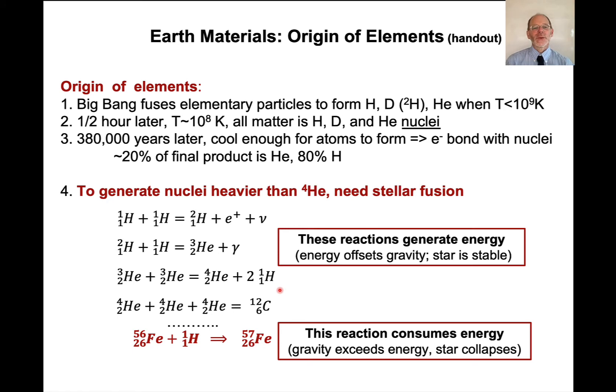To generate those nuclei that are heavier than helium-4 requires stellar fusion. So the way this works is that if you compress matter sufficiently and raise temperature high enough, then two atoms can fuse together to form another atom that has a heavier mass. So here's an example. If you take hydrogen-1 plus hydrogen-1 and you fuse them together, you can produce hydrogen-2, that's deuterium, plus a positron.